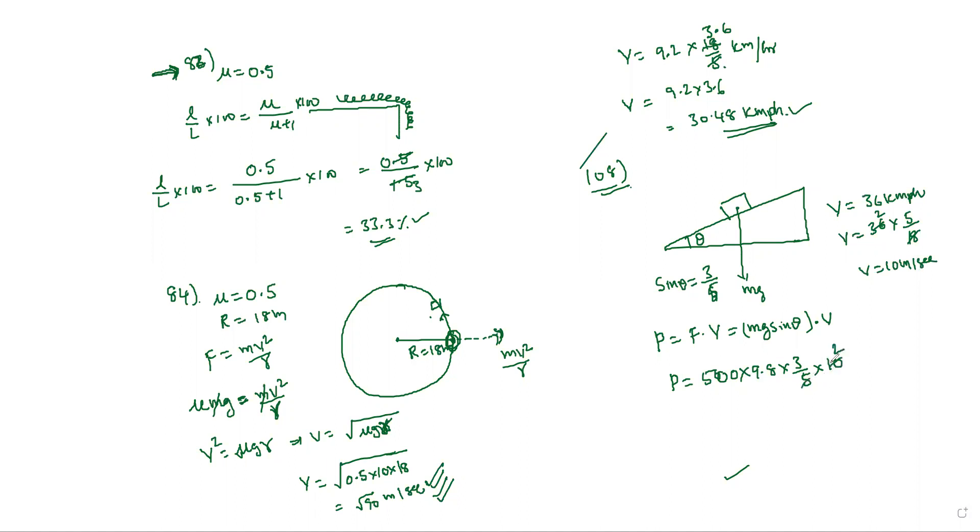So two threes are six, so P equals 500 into 9.8 into 6. Six fives are 30, 30 into 9, calculating the value. It becomes 29,400 watts, which becomes 29.4 kilowatts. This is the answer.